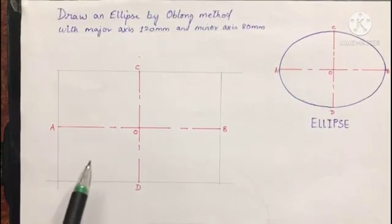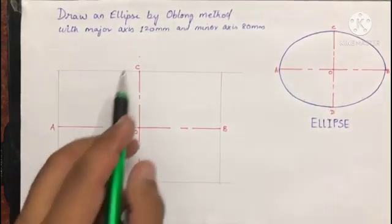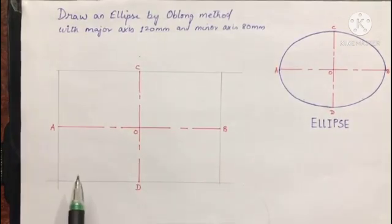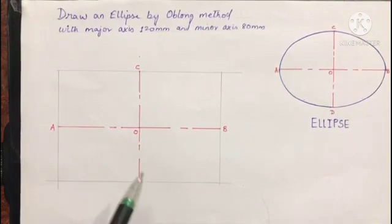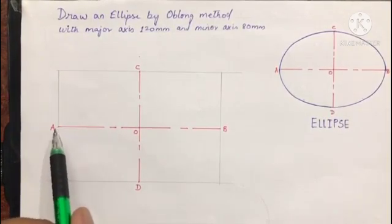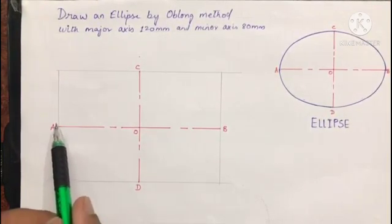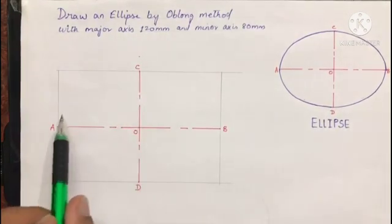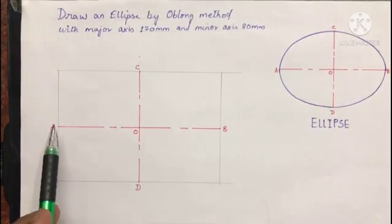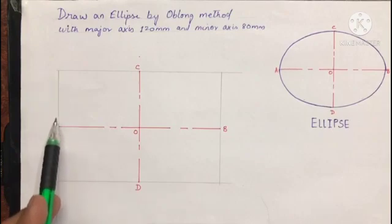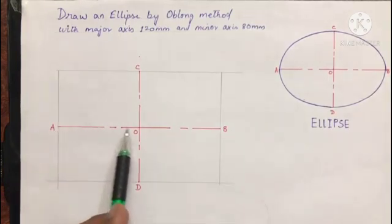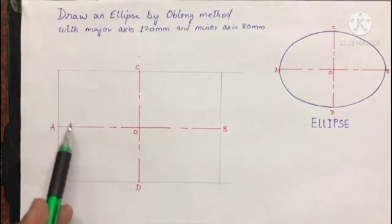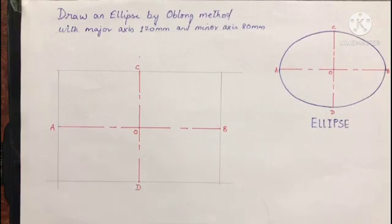Since we got the two axes, we know that the ellipse will definitely pass through these four points: A, B, C, and D. Now we start the construction of ellipse. For that, we will draw an ellipse in this quarter part. We will divide this vertical line into a number of parts and this horizontal line into a number of parts. Both these lines should be divided into equal number of parts.